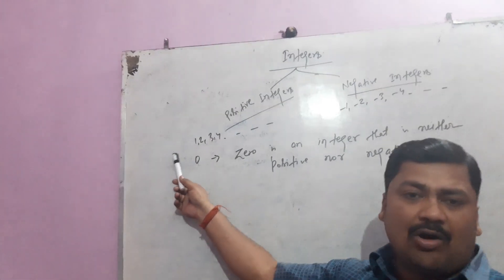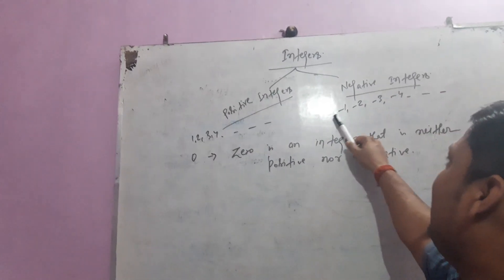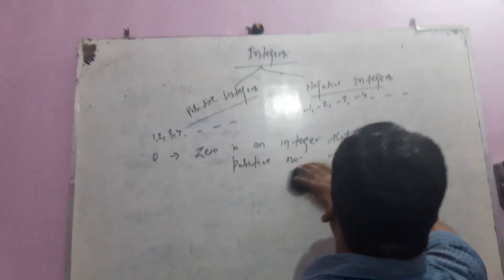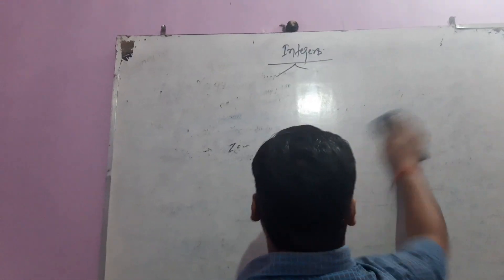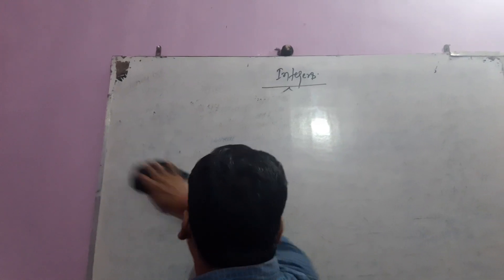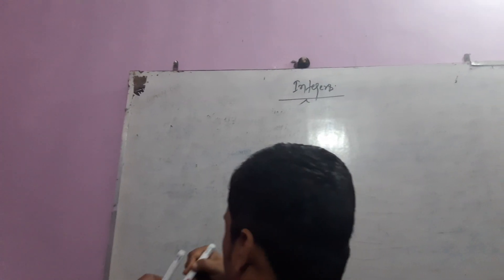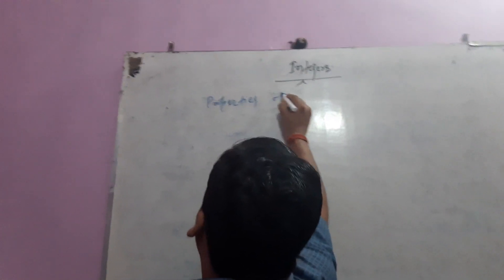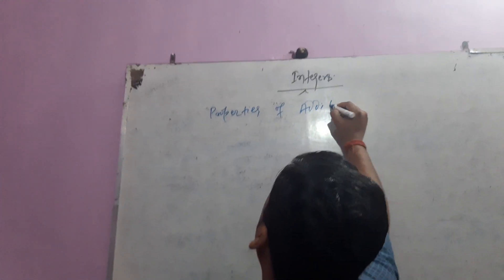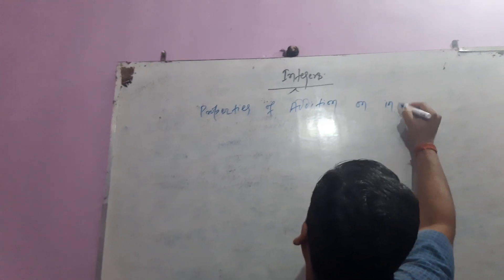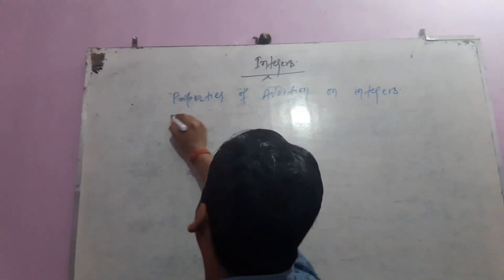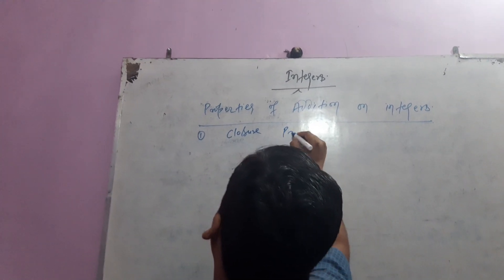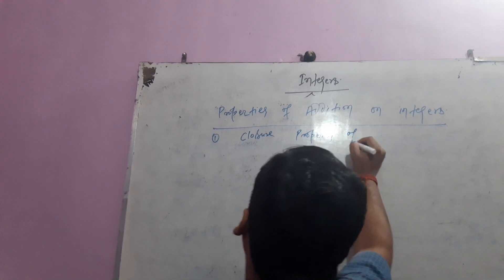Integers that contain a positive sign are called positive integers, and integers that contain a negative sign are called negative integers. Now we have to learn some properties of integers. The first set is: Properties of Addition on Integers. The very first property is the Closure Property of Addition.